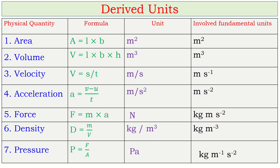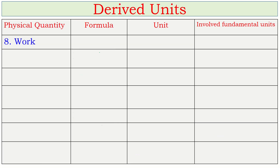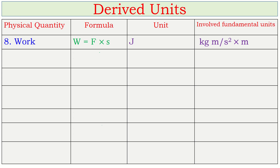Next: work. Work = force × displacement. Force is in newton and displacement in meter, so unit is newton meter. Named after scientist Joule, its unit is joule. The fundamental units: newton is kg·m·s⁻², multiplied by meter gives kg·m²·s⁻², written as kg·m²·s⁻².